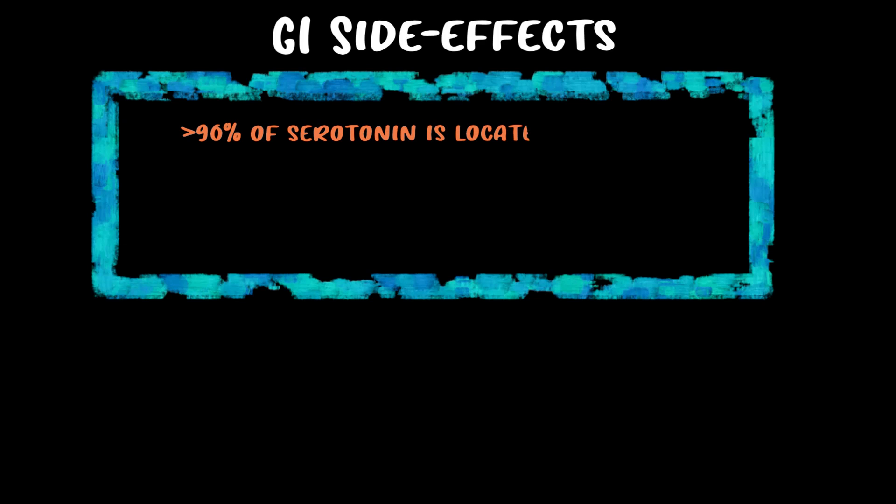The first side effect is GI side effects — gastrointestinal side effects like nausea, vomiting, and diarrhea. The fact that serotonin is called the 'happy neurotransmitter' is really more the result of good marketing than physiology. More than 90% of serotonin is actually located in the gut, so it's probably more accurate to call it the 'puking neurotransmitter.'